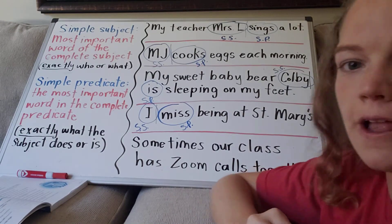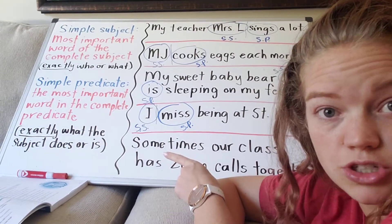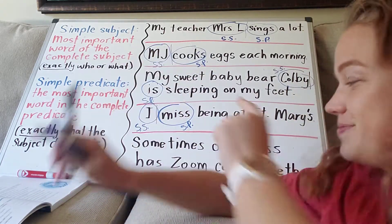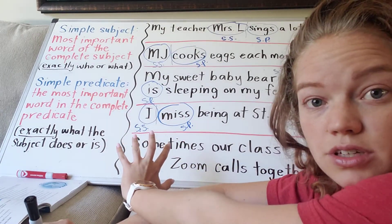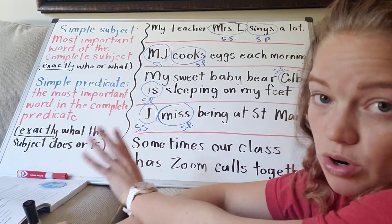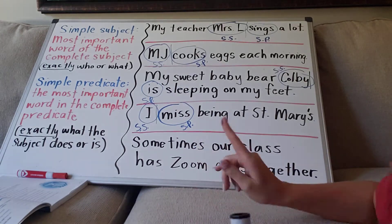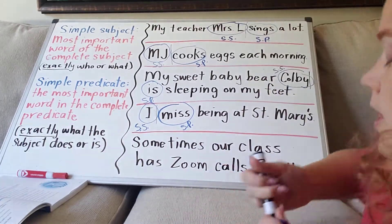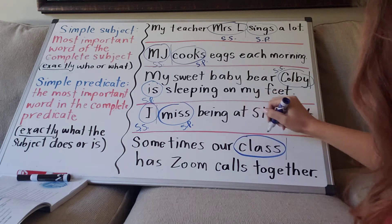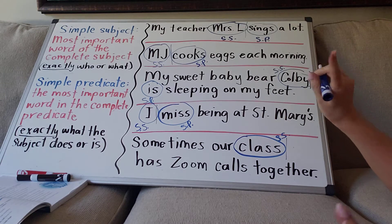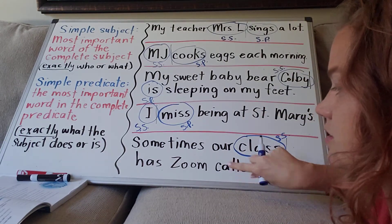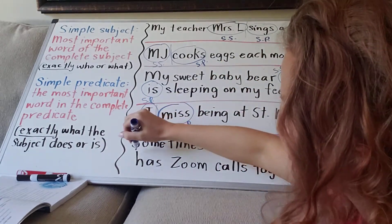Sometimes our class has Zoom calls together. Now I threw a qualifier in the front — the word 'sometimes' — which just gives you a time when an action is happening. It is not the subject and not the predicate; it influences the sentence but would not be considered a simple subject or simple predicate. The subject is 'our class,' so we can divide the sentence there. The simple subject I'd zoom in on is 'class.' You might be tempted to say 'calls' because it looks like a verb, but in this case 'calls' is a noun — it's the Zoom call we have. The action word is 'has.' So: class has.